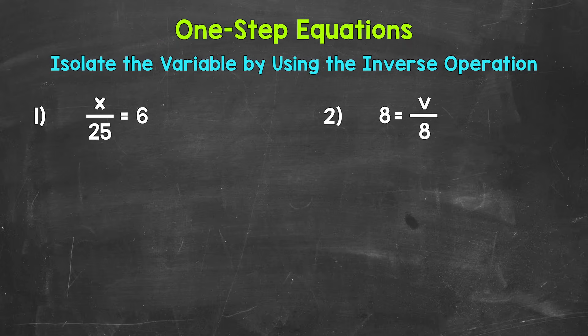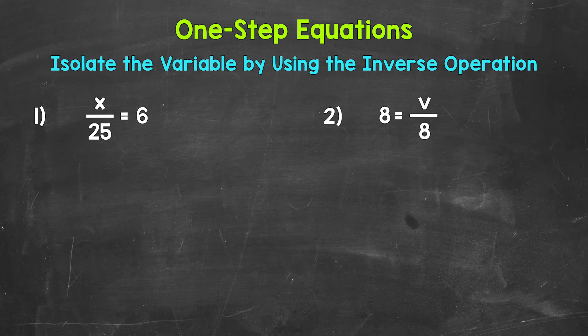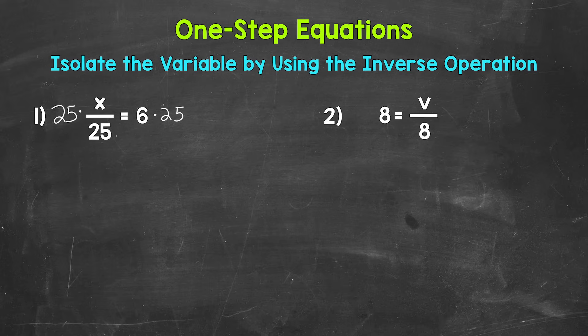Here are our examples of one-step division equations. Let's jump into number 1, where we have x divided by 25 equals 6. We need to isolate that variable of x. Since x is being divided by 25, we need to undo that division by using the inverse operation — the opposite operation. The opposite of division is multiplication. So, let's multiply the left side of the equation by 25. Whatever we do to one side of the equation, we must do to the other in order to keep it balanced and equal. So, let's multiply the right side by 25 as well.